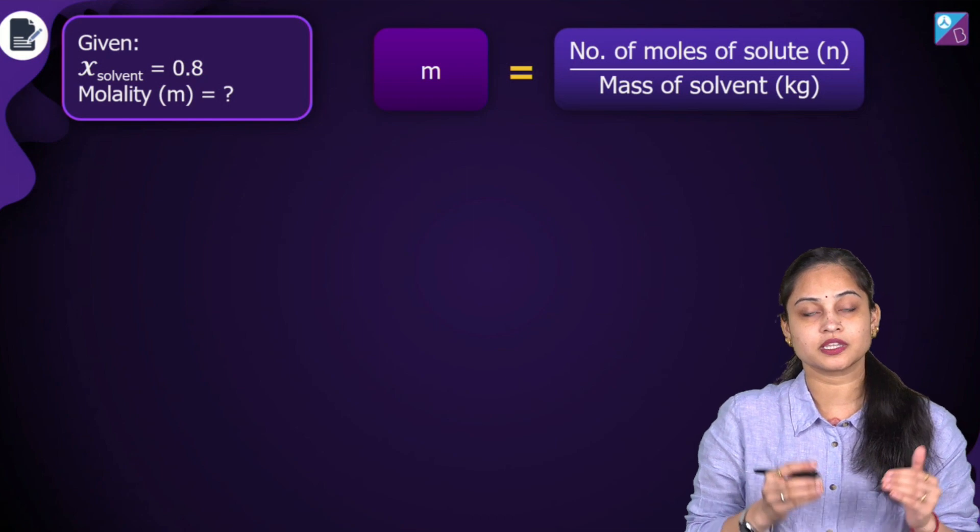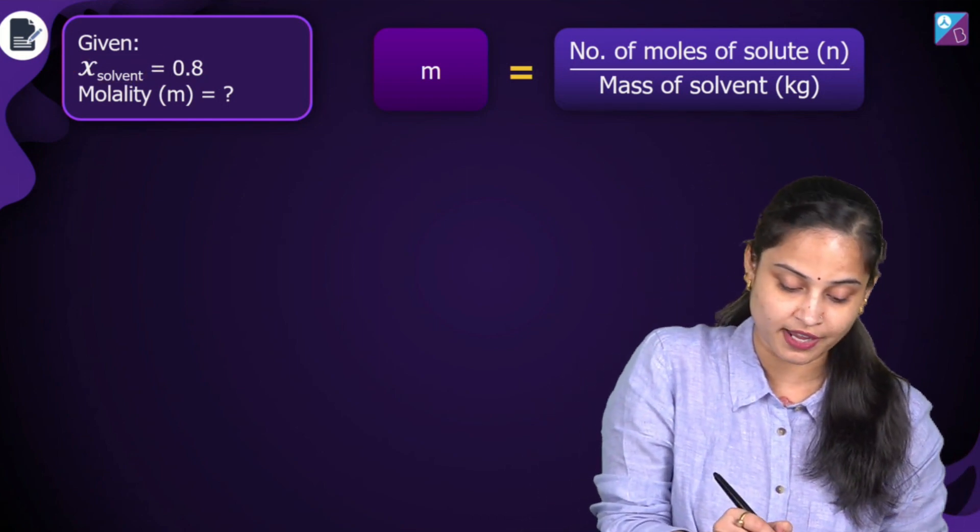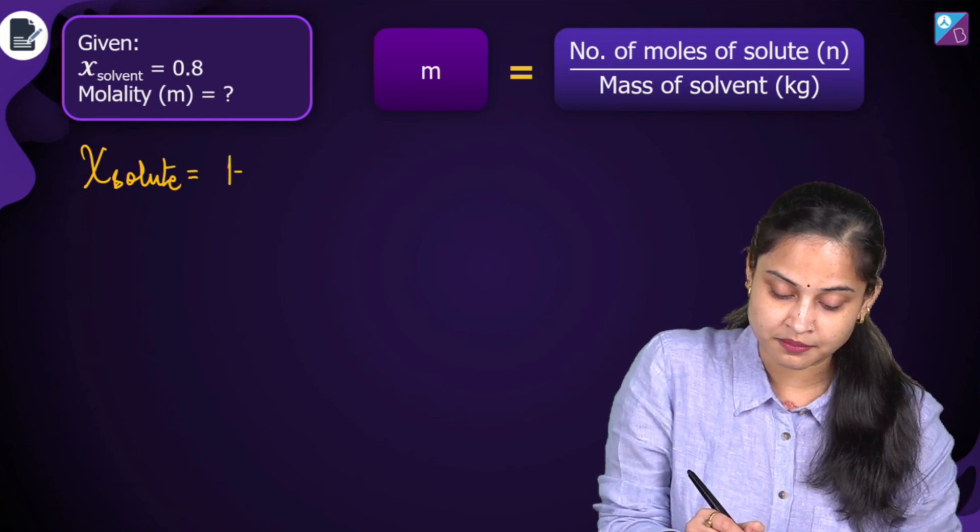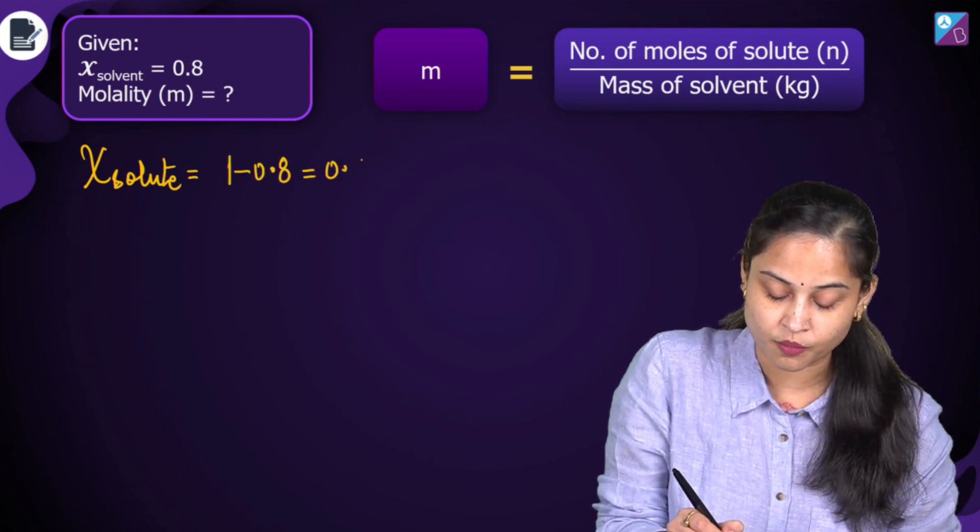We have been given the mole fraction of solvent. So what will be the mole fraction of solute then? Mole fraction of solute will be 1 minus 0.8 which comes out to be 0.2.